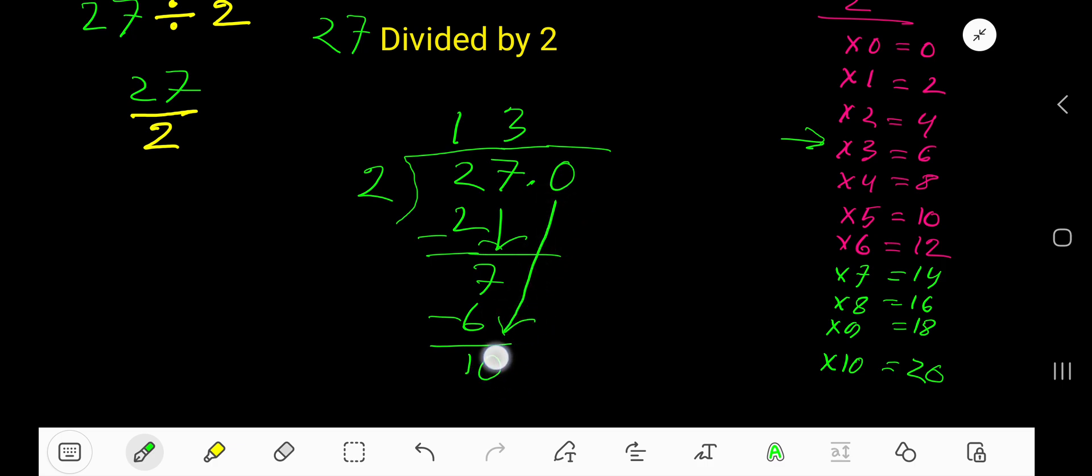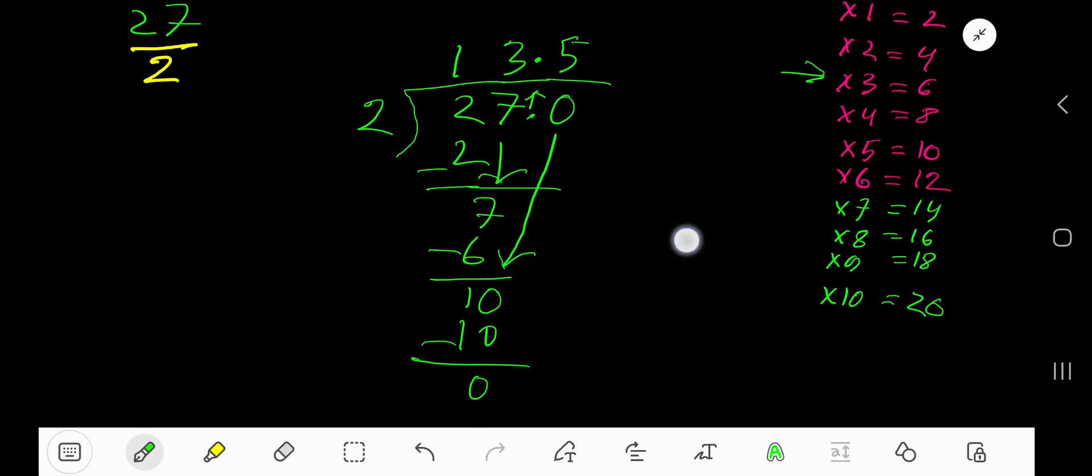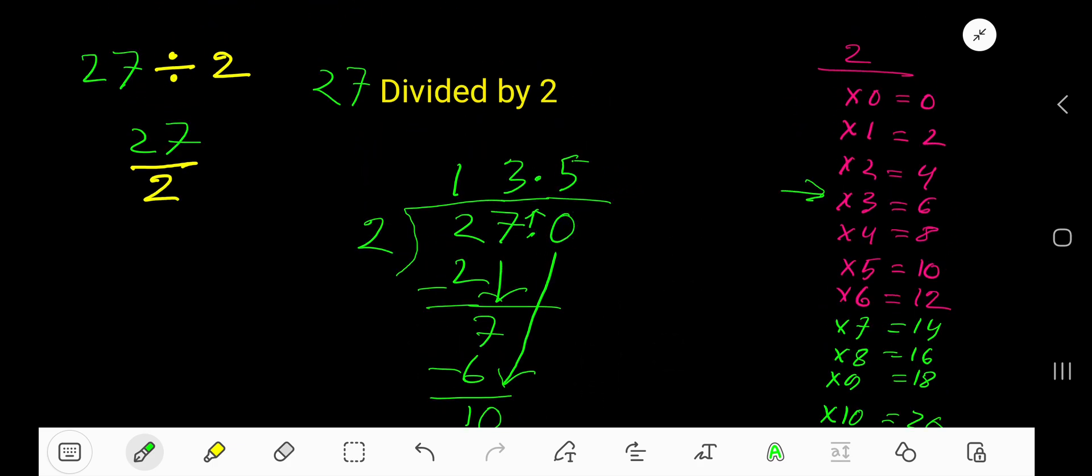Bring down the first 0, but before the zero there's a decimal. The decimal must come to the quotient directly. 2 goes into 10 how many times? 5 times, right? 5 times 2 is 10. If you subtract, you're getting 0. That is, 13.5 is your answer.